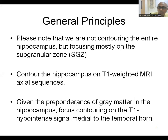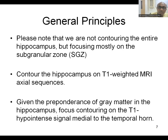The general principle is that the subgranular zone must be contoured. Contour the hippocampus on T1-weighted MRI sequences. Given the importance of gray matter in the hippocampus, focus contouring on the T1 hypointense area medial to the temporal horn. Remember four landmarks: temporal horn, quadrigeminal cistern, hypointense area, and the posteromedial part — if you remember these four, hippocampus contouring is very simple.